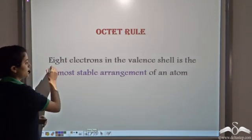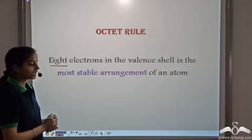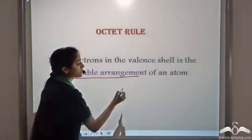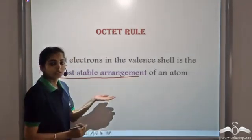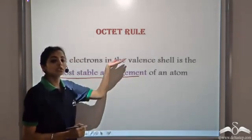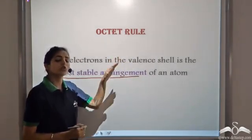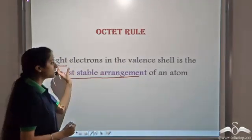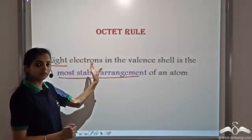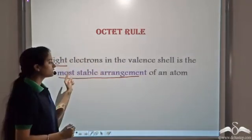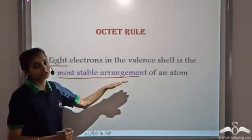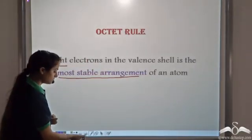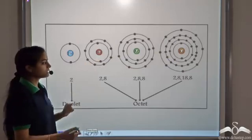8 electrons in the valence shell is the most stable arrangement of an atom. This is known as the octet rule. It holds for all atoms. Whenever any atom has 8 electrons in the valence shell, that is the most stable arrangement for that particular atom.